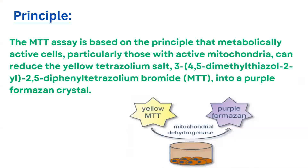Now we will see the principle of the MTT assay. The MTT assay is based on the principle that metabolically active cells, particularly those with active mitochondria, can reduce the yellow tetrazolium salt — 3,4,5-dimethylthiazol-2,5-diphenyl tetrazolium bromide (MTT) — into purple formazan crystals. When the yellow MTT dye is added to cells in 96-well plates, if the cells are active, the yellow MTT converts to purple formazan.